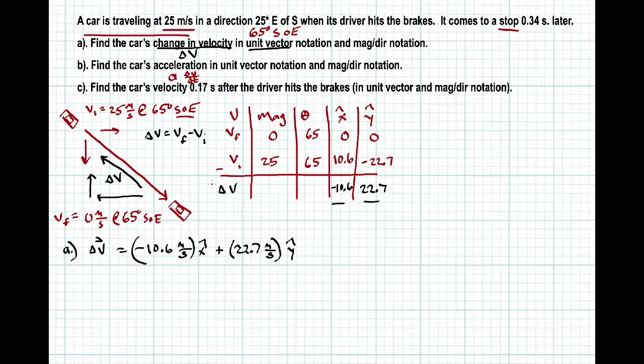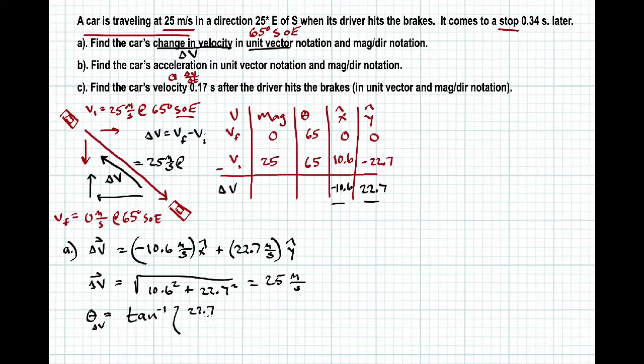Well, just as easily we can find the magnitude direction of our change in velocity. We simply just do the Pythagorean. So square root of 10.6 squared plus 22.7 squared gives us 25, 25 meters per second. Let's find the direction of this delta v right here. Well, the direction is inverse tangent of 22.7 divided by 10.6. And that gives us, sure enough, you could have predicted this probably, 65 degrees.